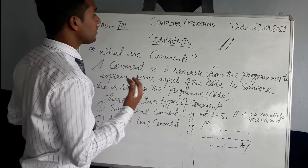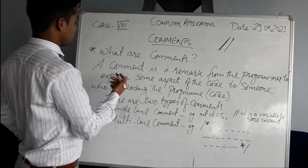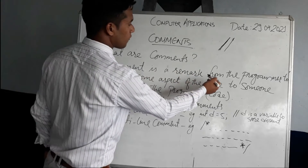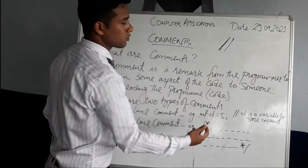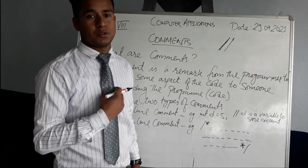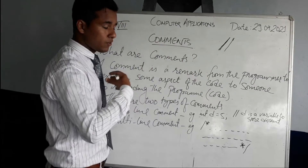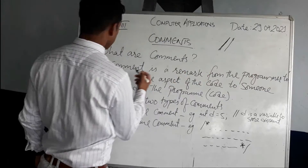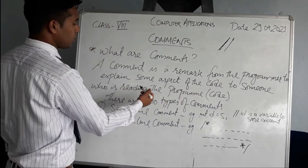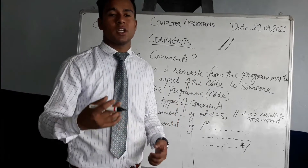So what are comments? A comment is a remark from the programmer. Suppose if I am writing a program, I am considered as a programmer or a user. A comment is a remark given by the programmer to explain some aspect of the code to someone who is reading the program. That is called a comment.